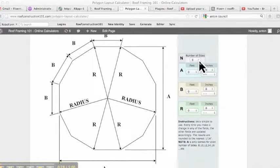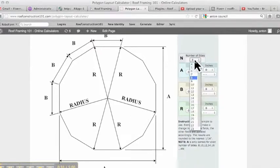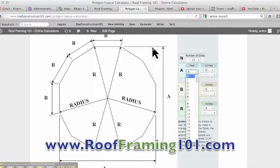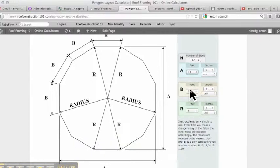So in this particular part, we're going to punch in a 12-sided polygon, and then if you notice on number A, which is the overall size of the polygon, let's go and we'll do 10 feet. And then you notice, just like the Octagon Layout,